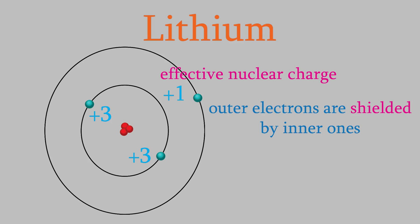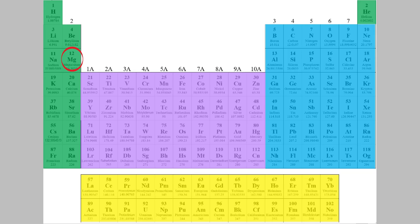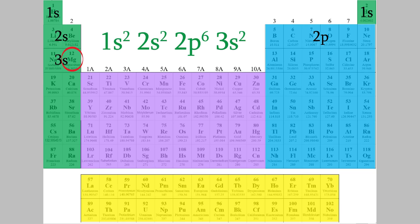For example, take magnesium. It has 12 electrons. If you write the electron configuration for magnesium, you find that it's 1s2, 2s2, 2p6, 3s2. So there are a total of 2 electrons in the first shell, 8 in the second, and 2 in the third.